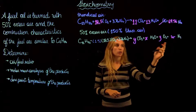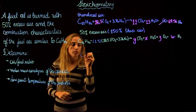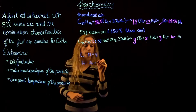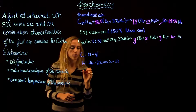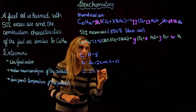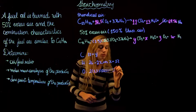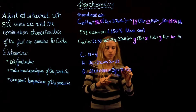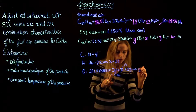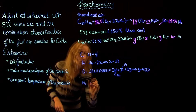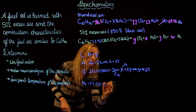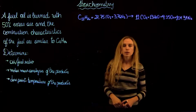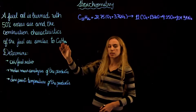Now we can solve for the unknowns with 50% excess air. For carbon: Y equals 12. For hydrogen: 26 equals 2X, so X equals 13. For oxygen: 2 times 1.5 times 18.5 equals 2Y plus X plus 2Z, giving Z equals 9.25. For nitrogen: 1.5 times 18.5 times 3.76 equals W, which gives W equals 104.34. So we've now found the full combustion reaction with 50% excess air.